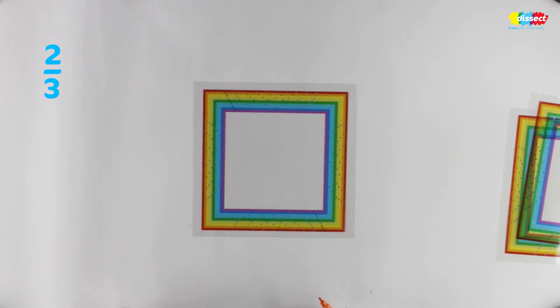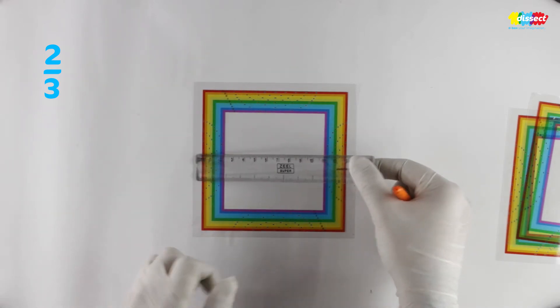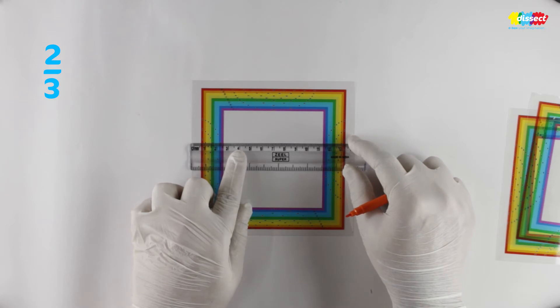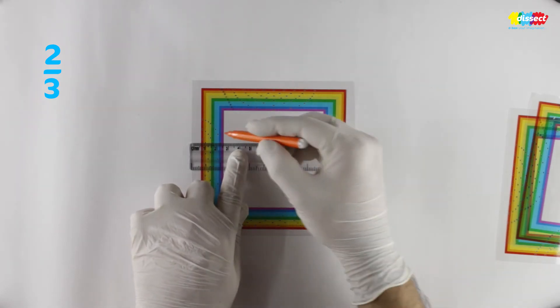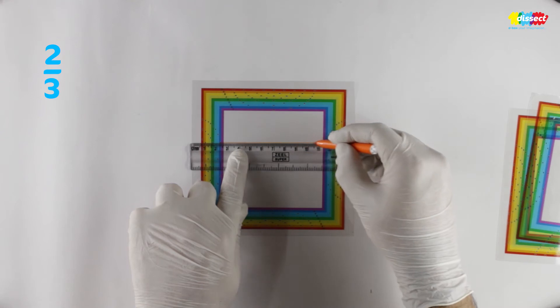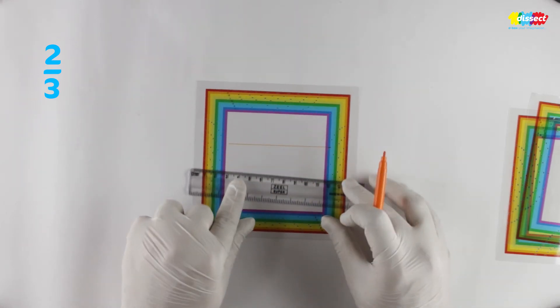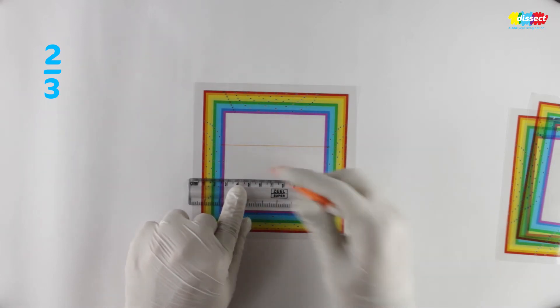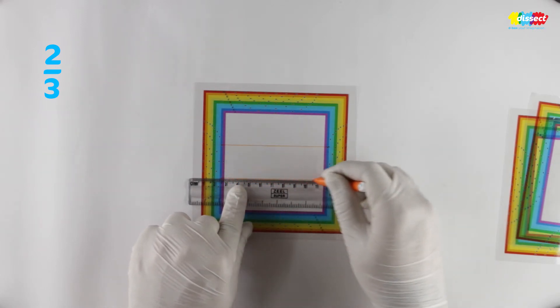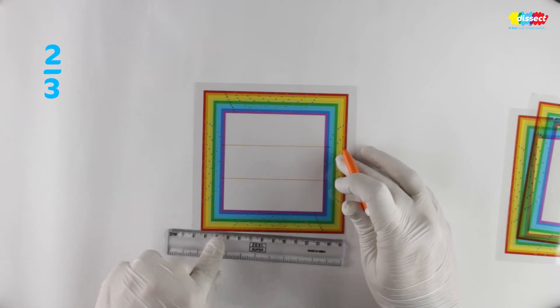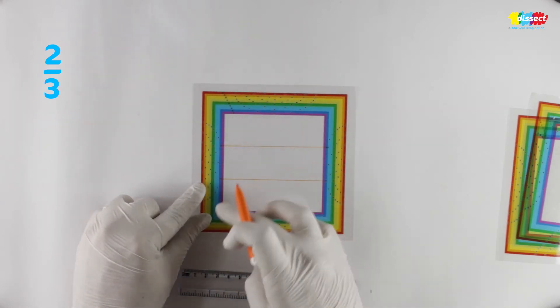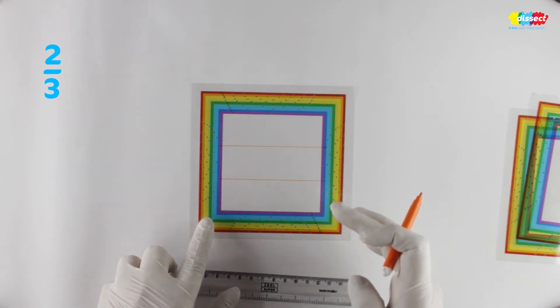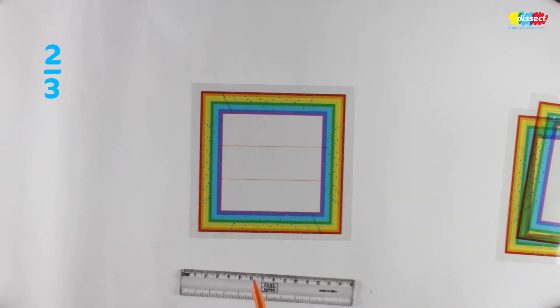Now what I am going to do for the ease of doing the activity, I am going to join these two dots. So I have joined the first line that I have made and then this is the second line. So this is a fraction, the central white part that you see, we have made 3 equal parts of that central white part.